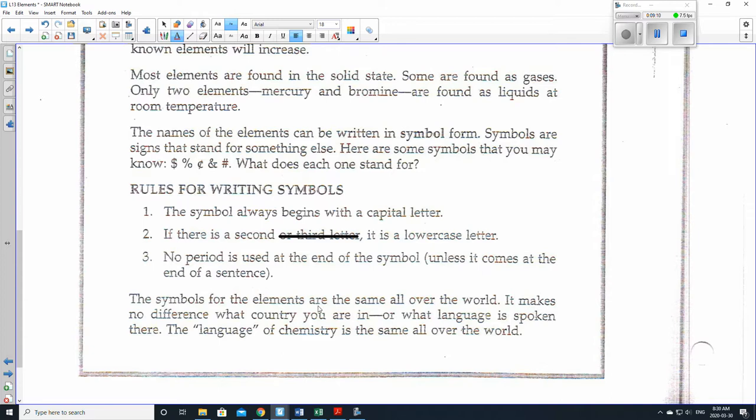So the symbols for the elements are all the same all over the world. It makes no difference what country you are in or what language is spoken. The language of chemistry is the same all over the world. And so the symbols are always the same. This is also for safety reasons as well just to make sure that everyone is on the same using the same standard. Even the symbols in different languages are all the same. They're standard. And this is for safety reasons so that everyone can understand them.